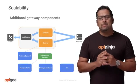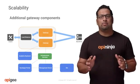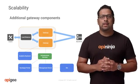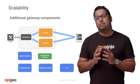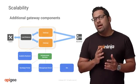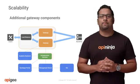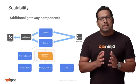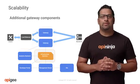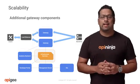Apigee Edge, as a platform, is horizontally scalable, where additional gateway components can be added to keep up with increased API volume, high availability, and other resiliency requirements. As the number of gateways increases, some of the supporting infrastructure services may need to scale out as highlighted.